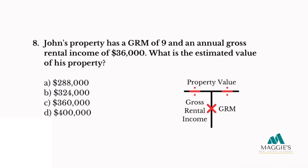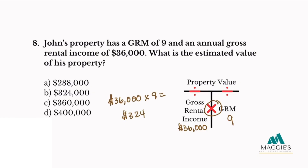Question eight: John's property has a GRM of 9 and an annual gross rental income of $36,000. What is the estimated value of his property? A. $288,000, B. $324,000, C. $360,000, or D. $400,000. With a GRM of 9 in the right column and gross rental income of $36,000 in the left column, according to the t-chart method I multiply: $36,000 times 9 equals $324,000. The answer is B.